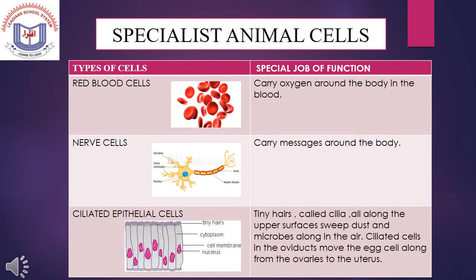Specialist Animal Cells: Types include red blood cells, nerve cells, and ciliated epithelial cells. Red blood cells carry oxygen around the body in the blood. Nerve cells carry messages around the body. Ciliated epithelial cells in the oviduct move egg cells along from the ovaries to the uterus.